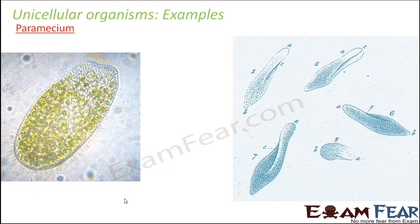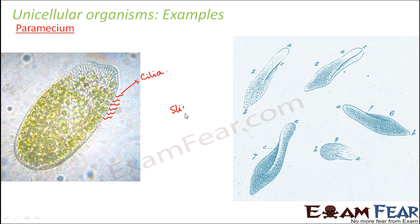Paramecium are ciliate organisms — they have cilia for their locomotion. We have already seen paramecium in our lessons on microbes. On the outer surface, you can see small hair-like structures called cilia, which help them to move from one place to another. Paramecium are generally found in freshwater or marine environments and even in stagnant ponds or basins. They are also called slipper animalcule because of their appearance — if you look at the structure of a paramecium, it resembles quite like a slipper.